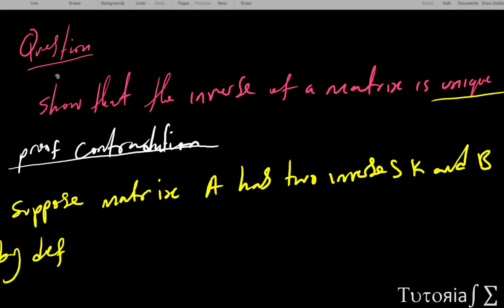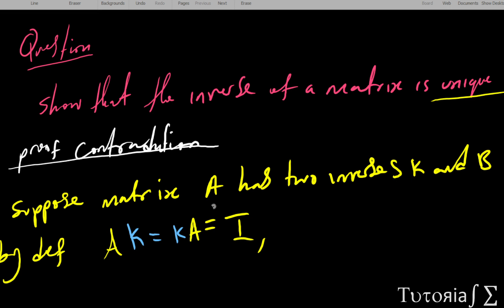By definition, if you take matrix A and multiply it by its inverse K, you get A times K equals the identity matrix I, and K times A also equals I. The same applies for the other inverse B: A times B equals B times A equals the identity matrix I.